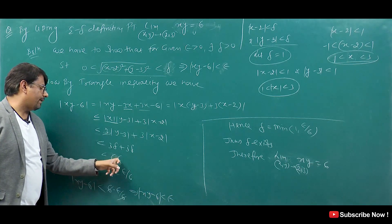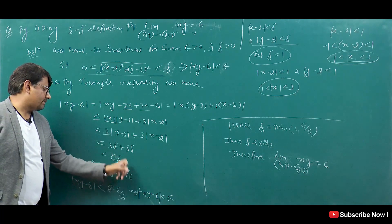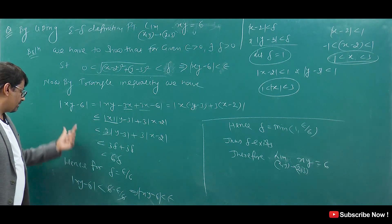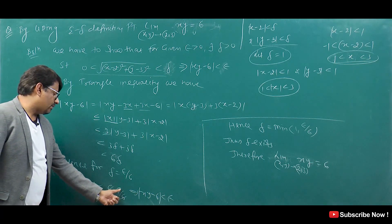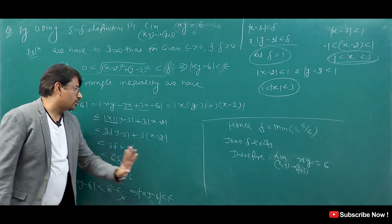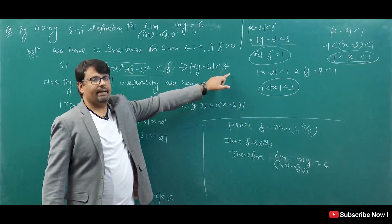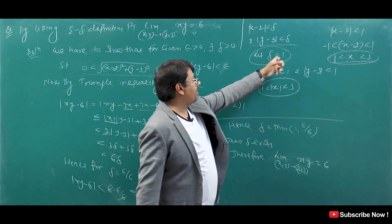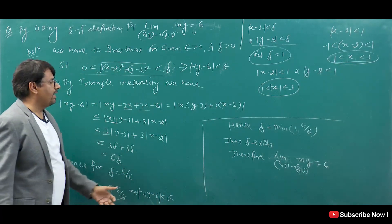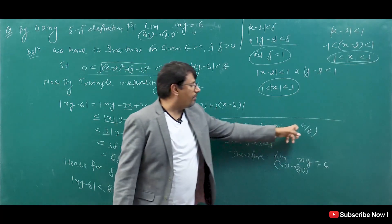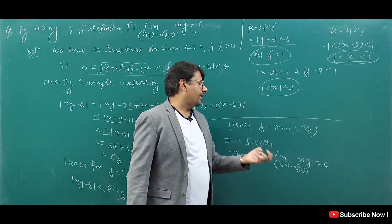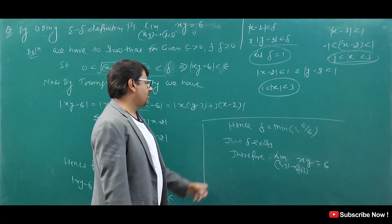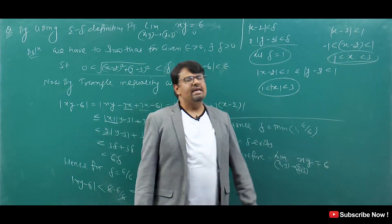So we take delta = epsilon/6. We want epsilon to appear here, so delta = epsilon/6. Then 6 and 6 cancel, giving epsilon. So |xy − 6| < 6 · (epsilon/6) = epsilon. We have proved this. Since both delta = 1 and delta = epsilon/6 are required, we take the minimum of both. Therefore, such a delta exists, and the limit of xy equals 6.